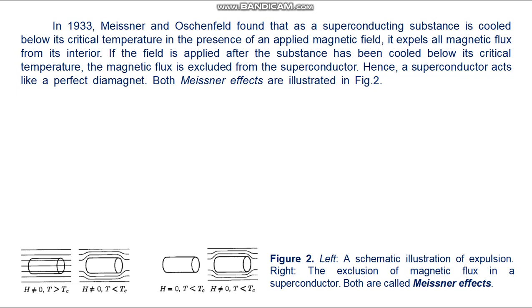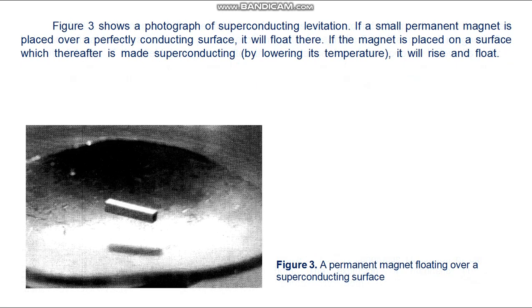Hence the two principal characteristics of superconductors — the exclusion of magnetic flux and the absence of resistance to current flow — are related to one another. It is necessary to have a persisting, resistance-less current to maintain the flux exclusion when the external field is on, as shown in figure 2.